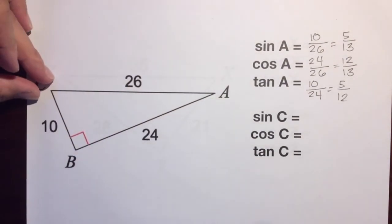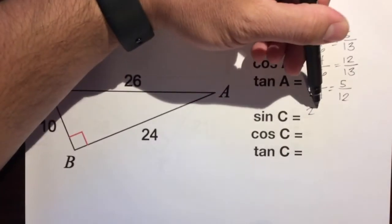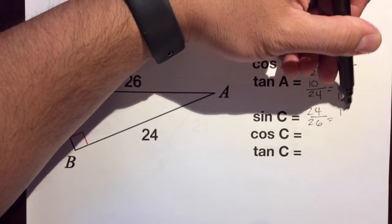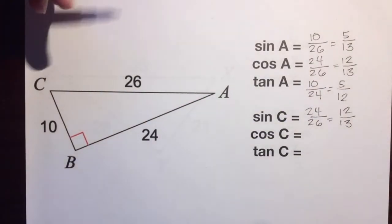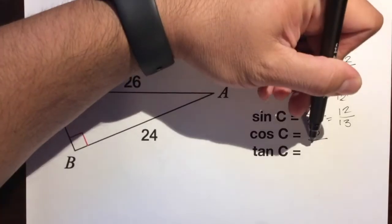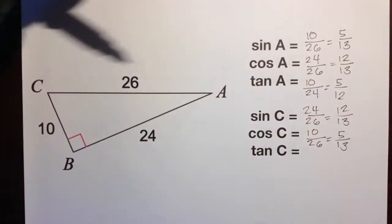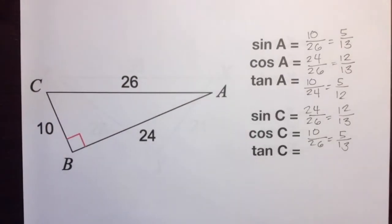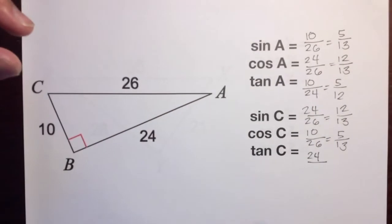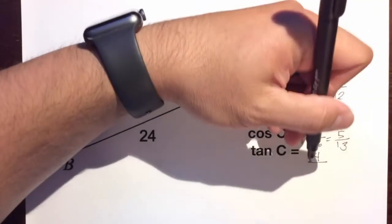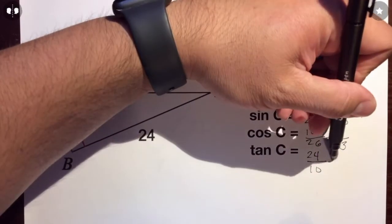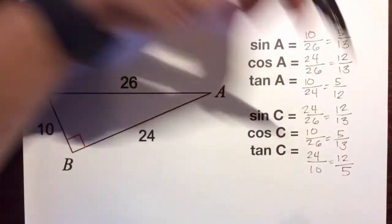Sine of C: opposite over hypotenuse — 24 over 26. Divide both by 2: 12 over 13. Cosine of C: adjacent over hypotenuse — 10 over 26, which simplifies to 5 over 13. And the tangent of C: opposite over adjacent — 24 over 10. Divide both by 2: 24 divided by 2 is 12, 10 divided by 2 is 5 — so tangent of C equals 12 over 5.